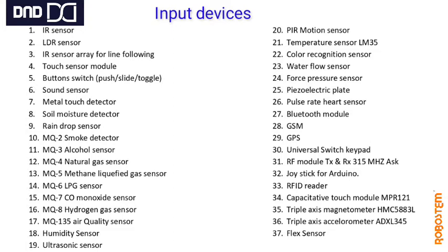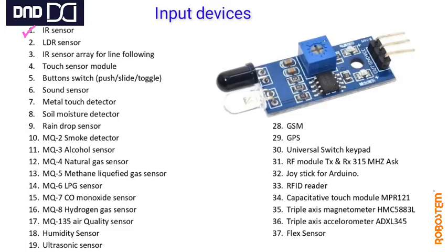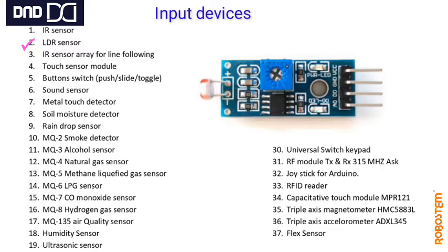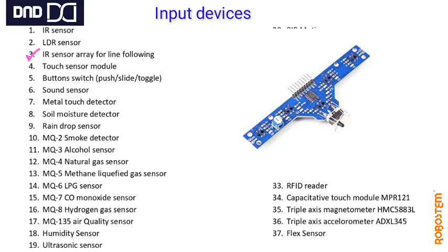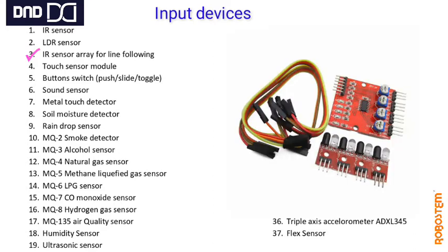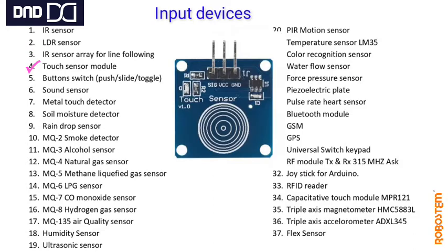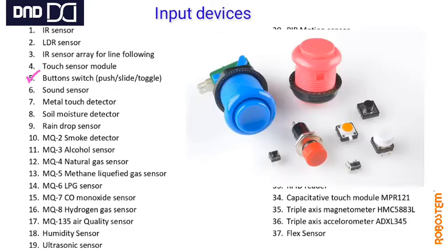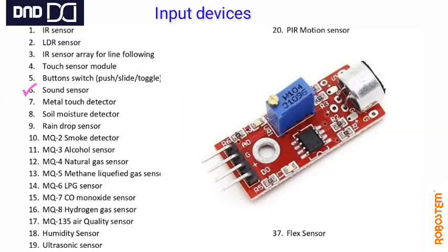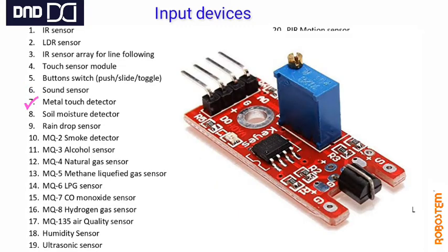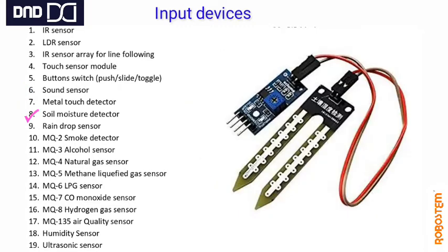IR sensor is available at the ATL level. It is a proximity switch, within a range of 2 to 4 cm. LDR, Light Dependent Resistor, works based on light intensity. IR is used on the line following robot. Touch sensor detects human touch. Button switch is used to switch signals. Sound sensor measures the intensity of sound. Metal touch detector detects metal contact.